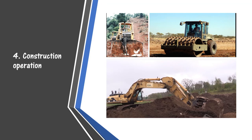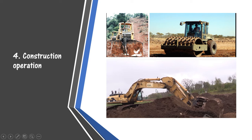Once everything is ready, construction operation begins. The first procedure is clearing — as you can see on screen, a blade is being used to clear up the route. Then compacting and placing the fill using an excavator. A smooth drum wheel roller is used for compaction, and the type of compaction equipment varies based on the type of soil. An excavator is being used to excavate the soil as the starting point for construction.